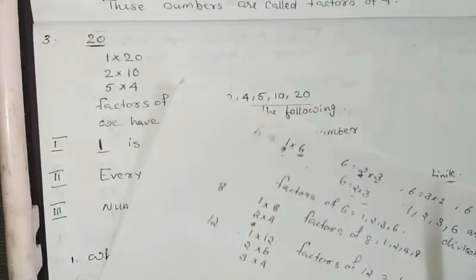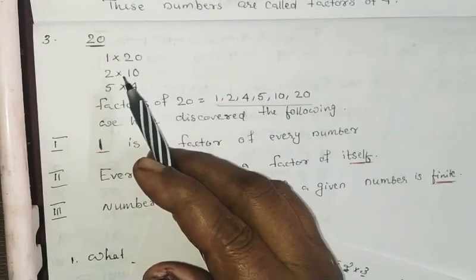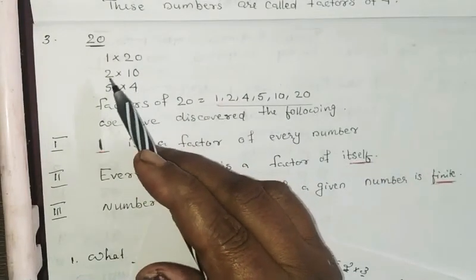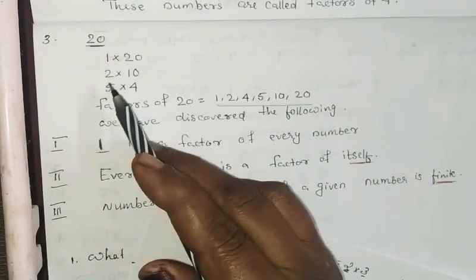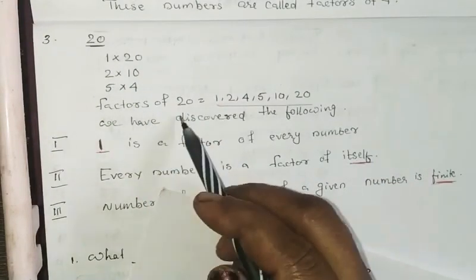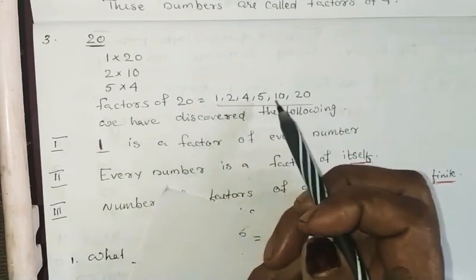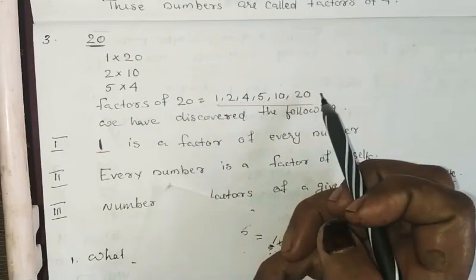Next example, 20. 20 is written as 1 into 20, 2 into 10, 5 into 4. The factors of 20 are 1, 2, 4, 5, 10, 20.